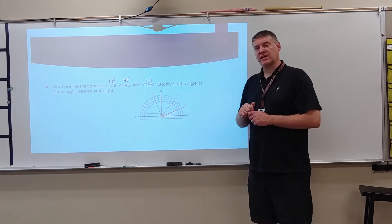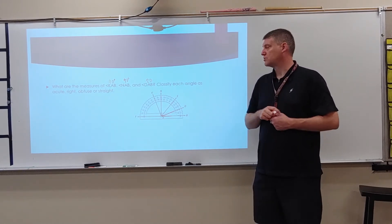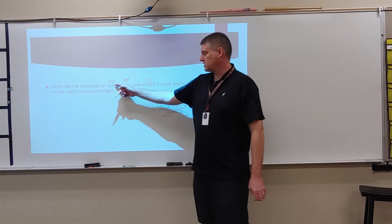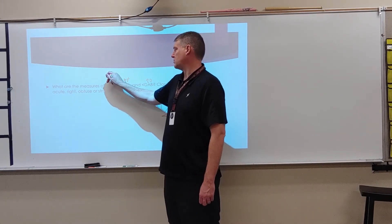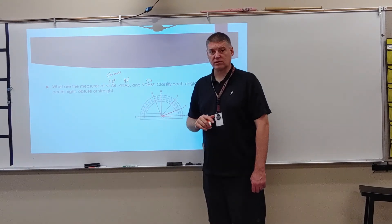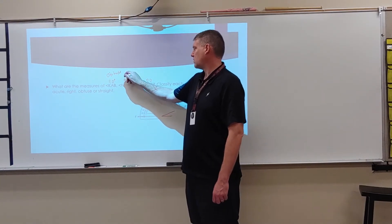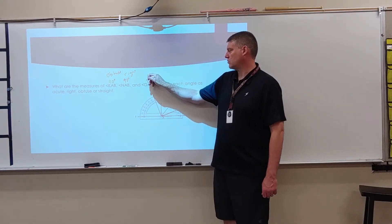Now, it asks me to classify each angle as acute, right, obtuse, or straight. So this is greater than 90 but less than 180. So this is obtuse. This is equal to 90. So it is right. And this is less than 90. So it's acute.